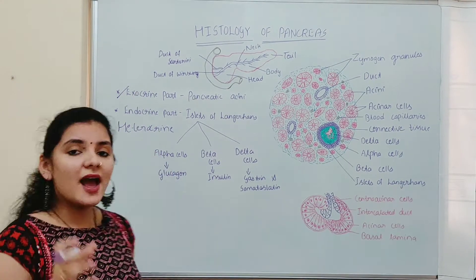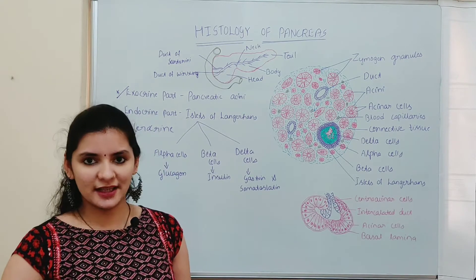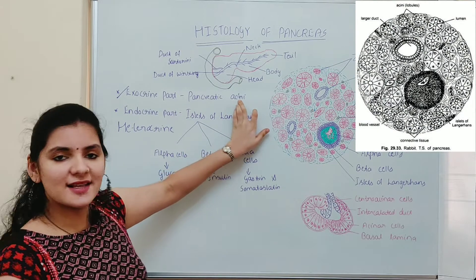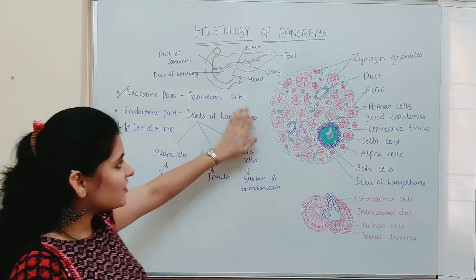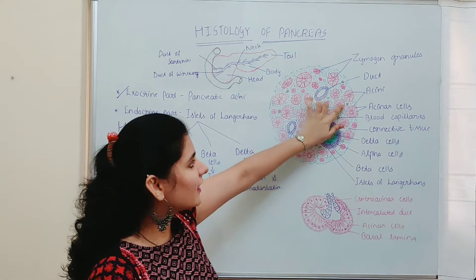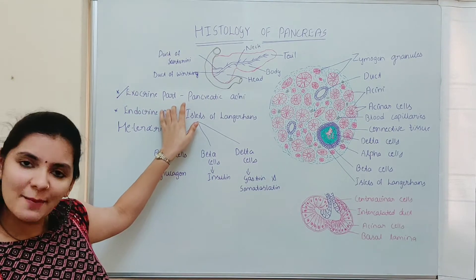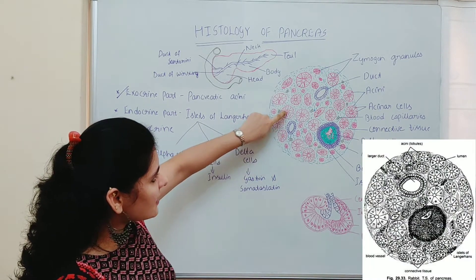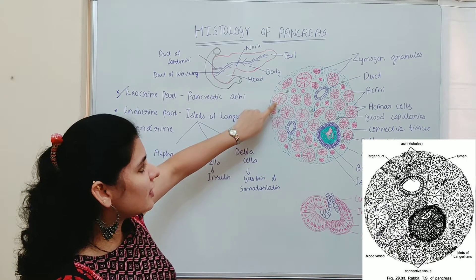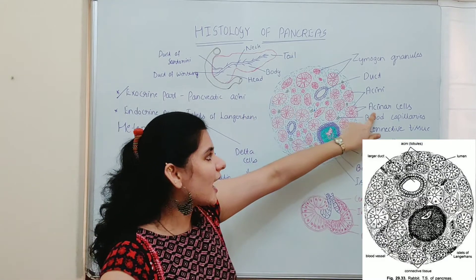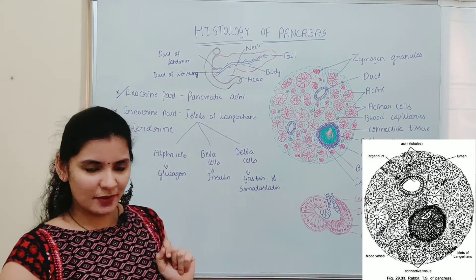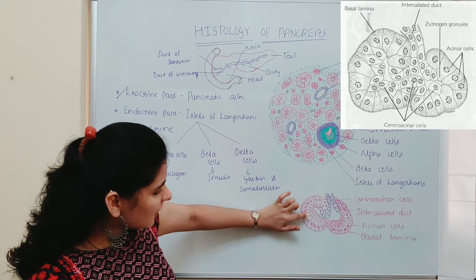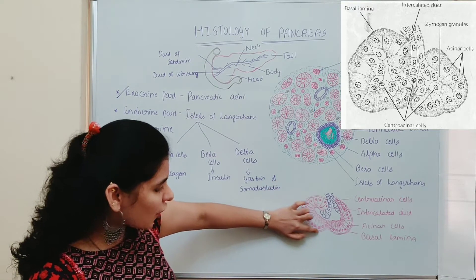The exocrine part of the pancreas secretes pancreatic juice, and it is known as pancreatic acinae, which is the major part of the pancreas. As you can see in this diagram, the pink parts are the pancreatic acinae. The pancreatic acinus is made up of triangular or pyramidal shaped epithelial cells known as acinar cells. These acinar cells rest on the basement membrane.